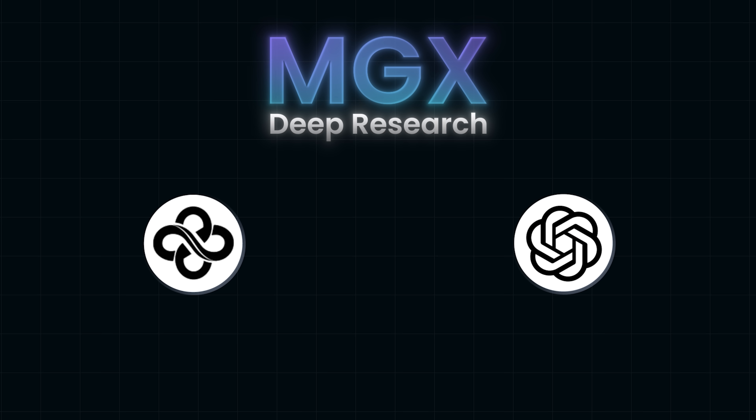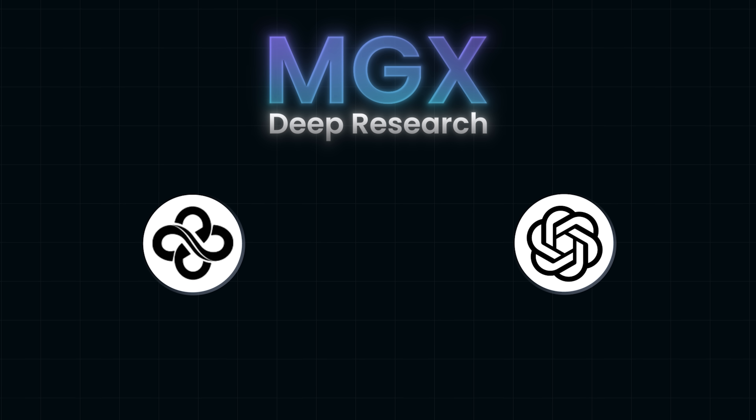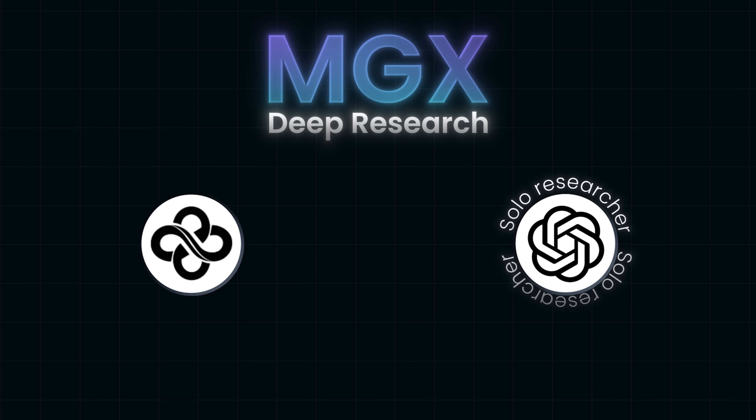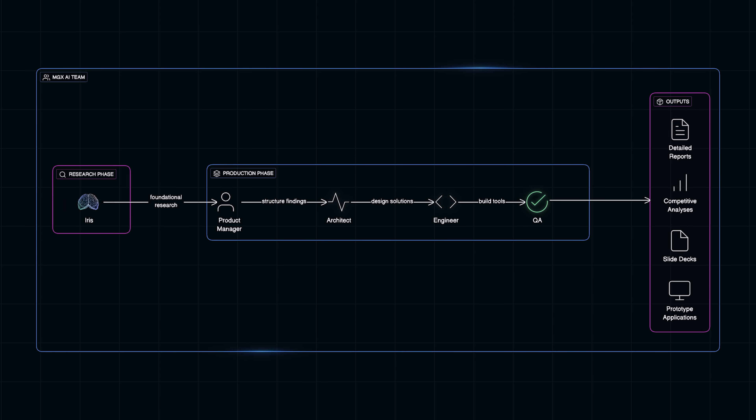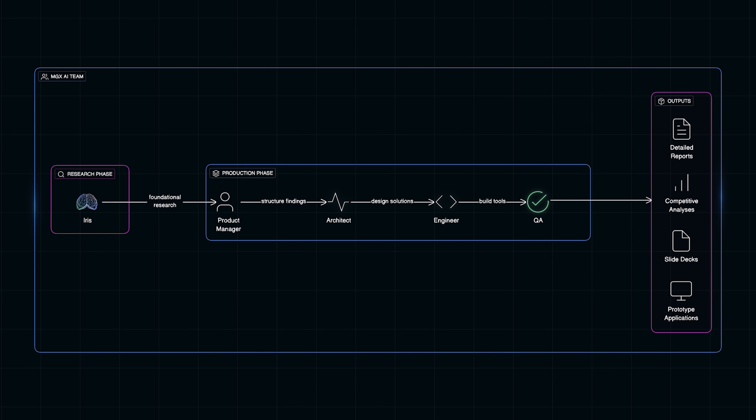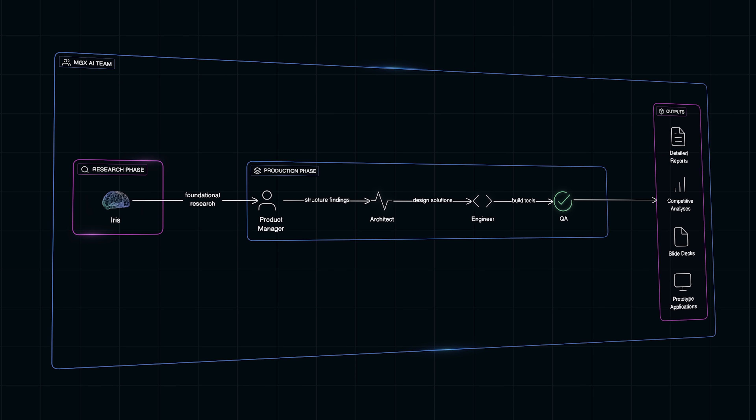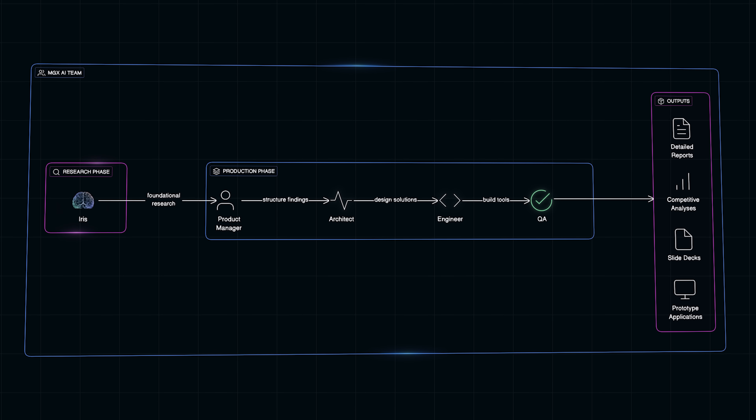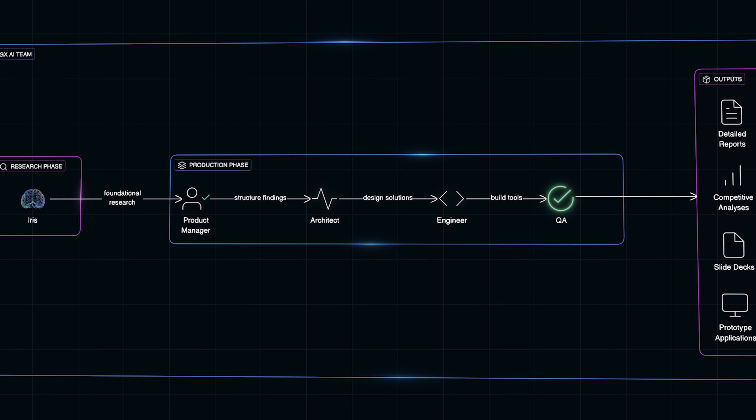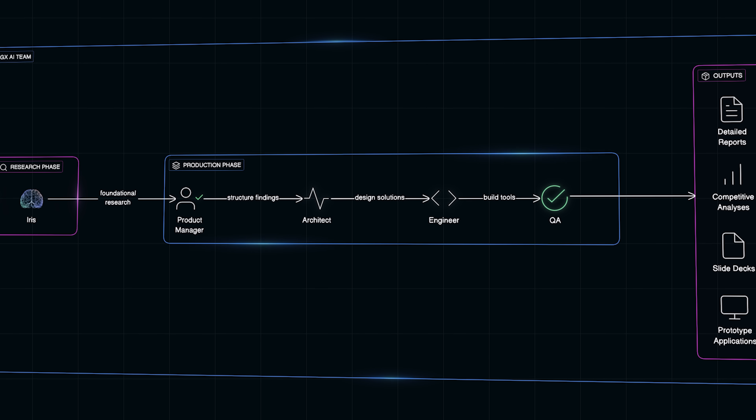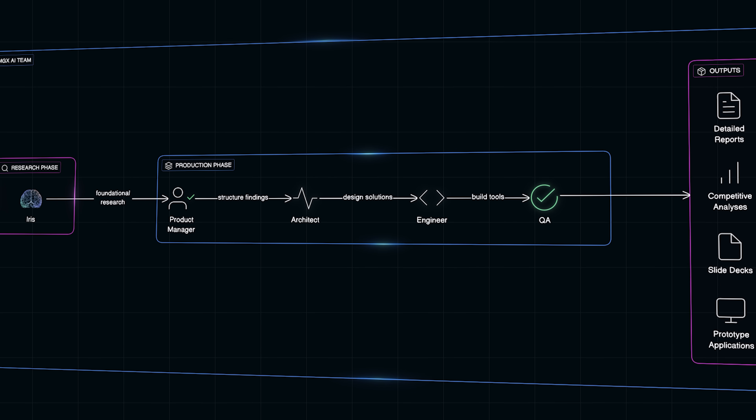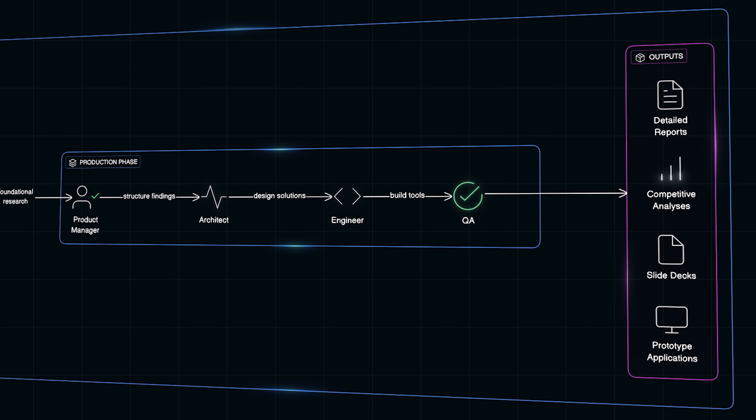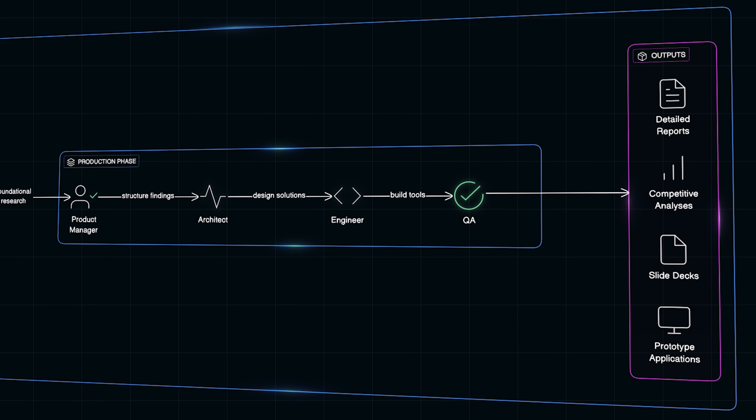MGX and ChatGPT Deep Research both aim to automate complex multi-step research, but they work very differently. ChatGPT's Deep Research is like a solo researcher - it browses the web, reads sources and writes reports on its own. MGX on the other hand functions like an entire AI team working together. At the start of any project, the Deep Research agent called IRIS kicks things off by gathering reliable market data, collecting sources and compiling foundational research. Once that base is ready, other specialized agents like the product manager, architect, engineer and QA step in to structure the findings, design solutions, build tools and verify results. This collaborative role-based architecture makes MGX far more capable of producing complex multi-layered outputs such as detailed reports, competitive analysis, APIs, polished slide decks and even prototype applications.